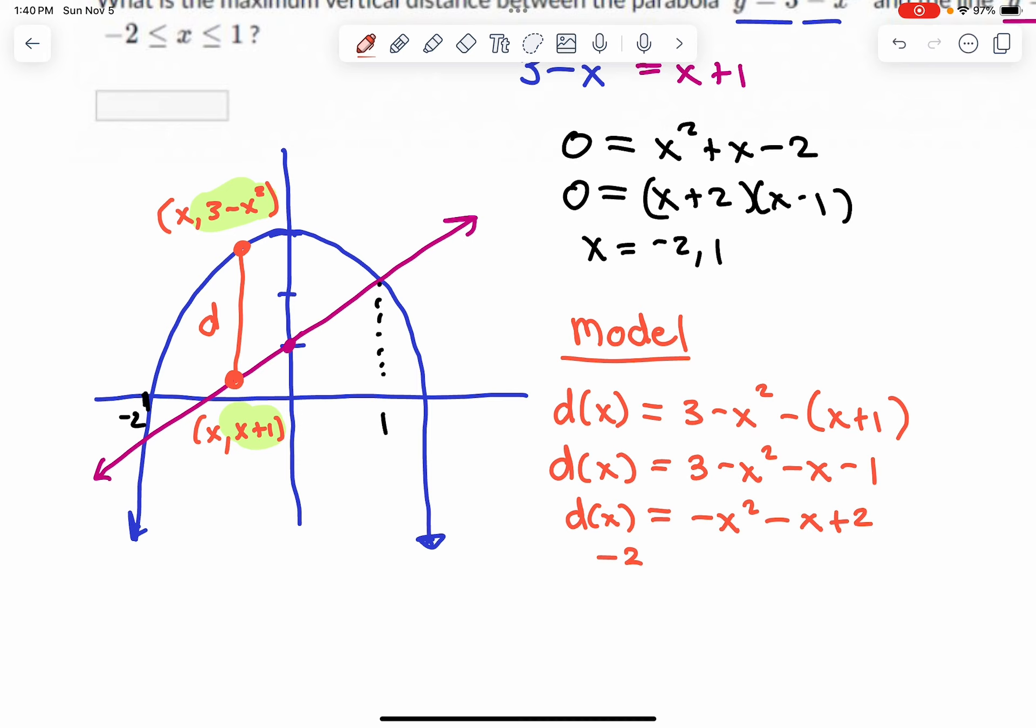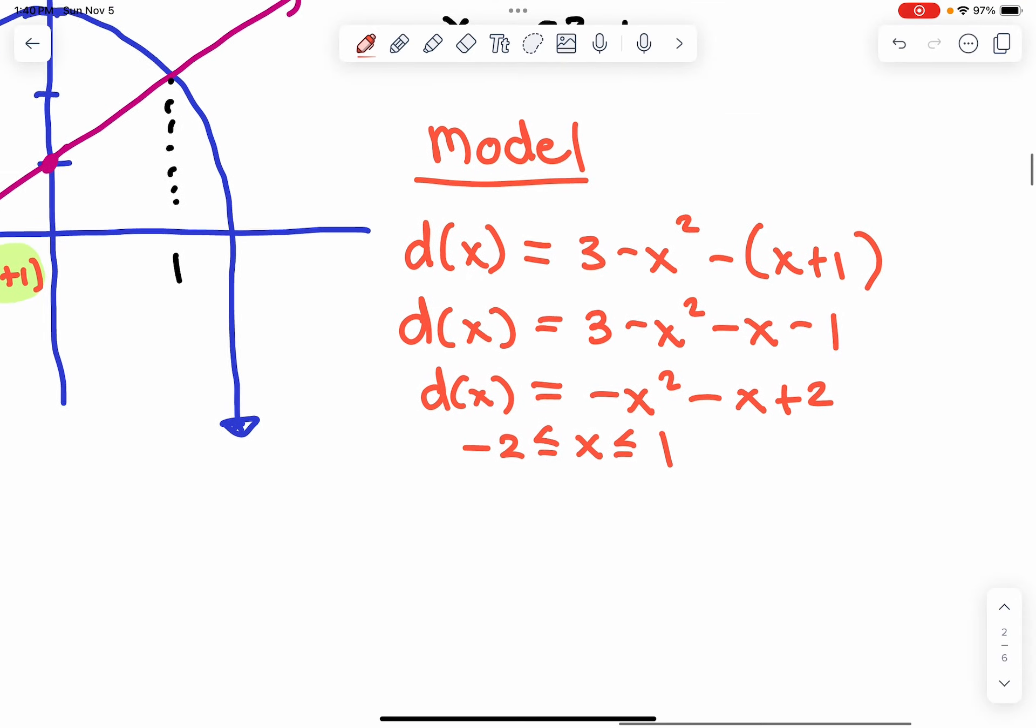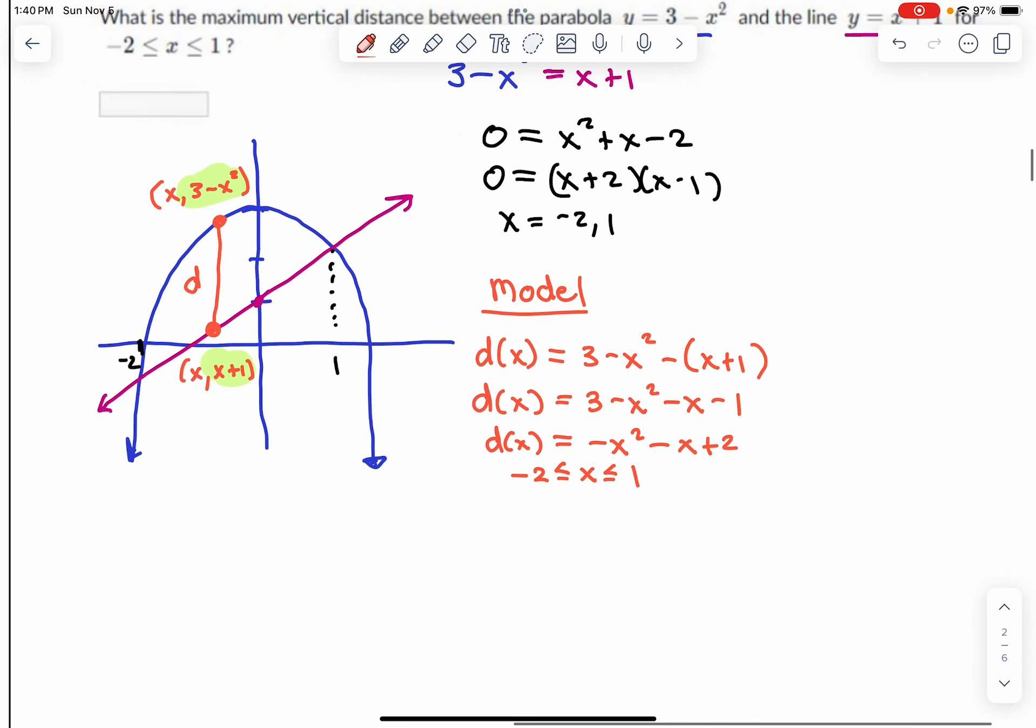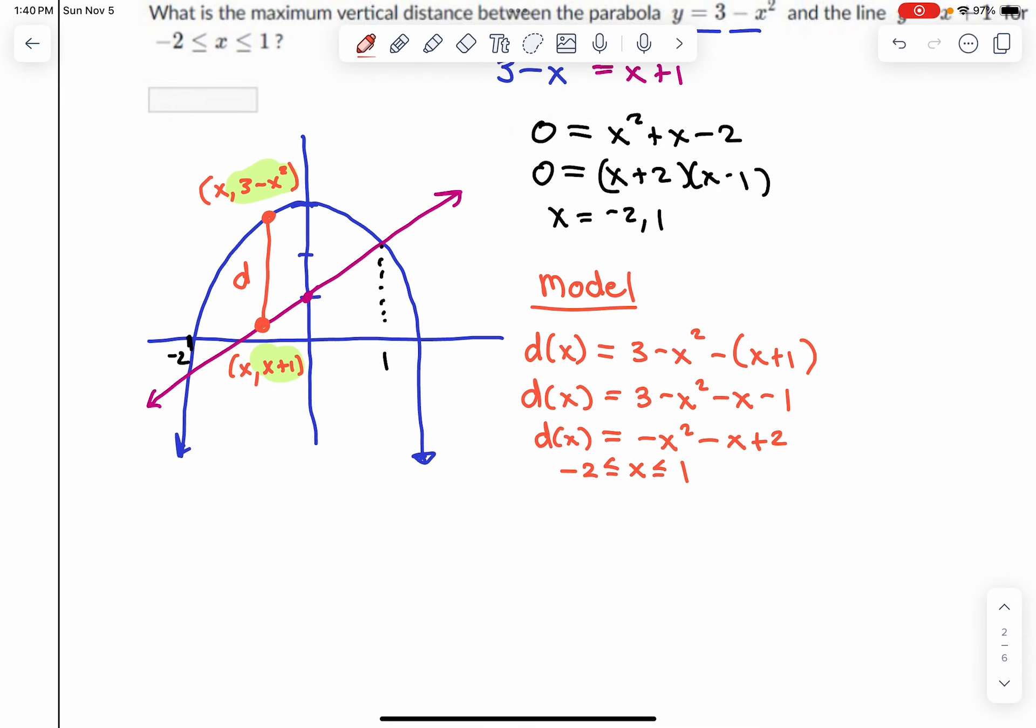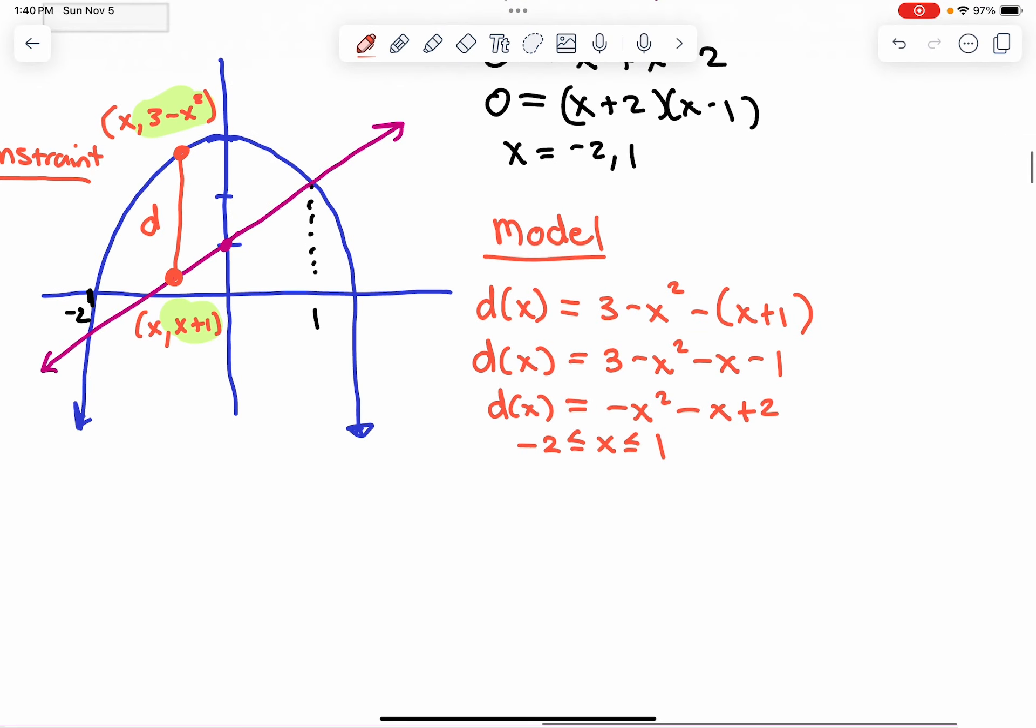I already know, because they told us, we're only looking on the interval negative 2 to 1. The constraint is really that these points are on the curve, on the respective curves. But now we can do calculus.